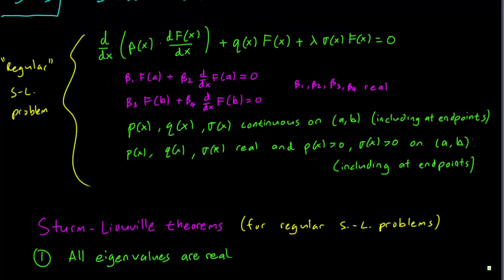The first theorem states that all the eigenvalues lambda are real. If you may recall our goal in these boundary value problems is always to find lambda for which there is a non-zero solution f and we have seen before in the past that all our eigenvalues are real and this is true for all regular Sturm-Liouville problems in fact.